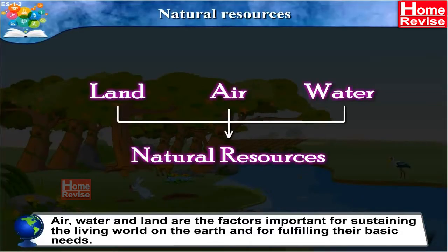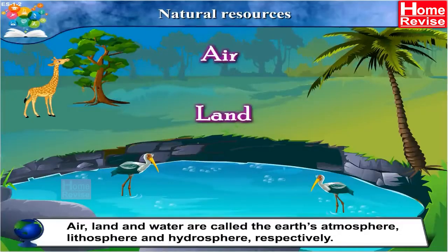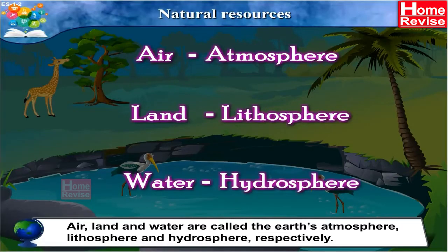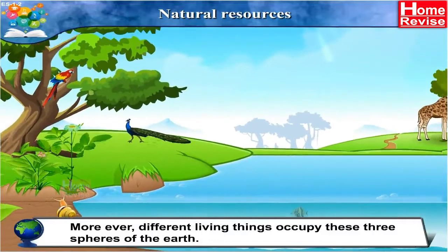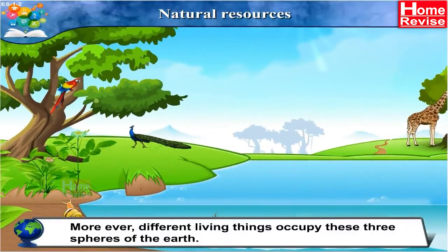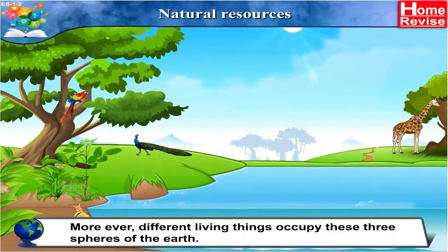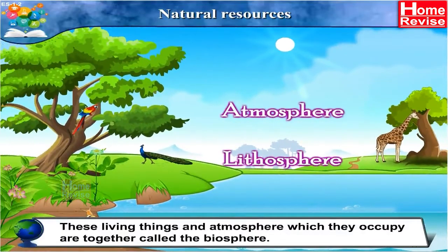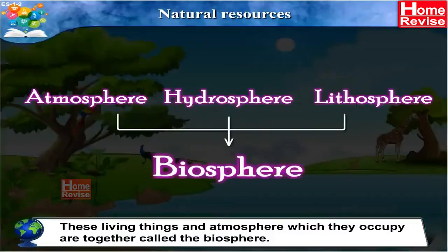Natural resources — air, land and water — are called the earth's atmosphere, lithosphere and hydrosphere respectively. Moreover, different living things occupy these three spheres on the earth. These living things and the atmosphere which they occupy are together called the biosphere.